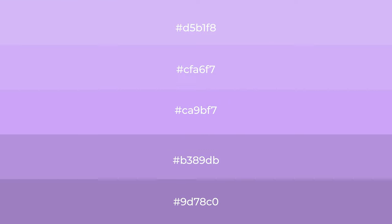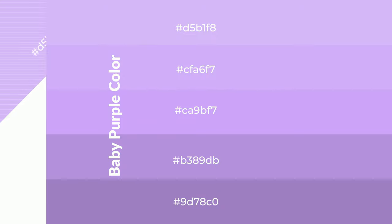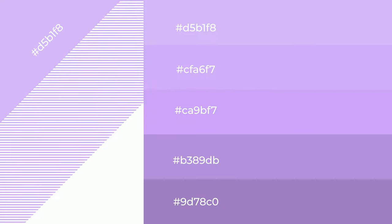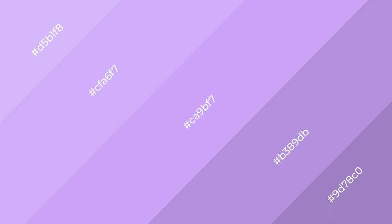To generate shades of a color, we add black to the color, and it is used in patterns, 3D effects, and layers. Shades create depth and drama. Baby purple is a warm color and it emits cozier and active emotions.